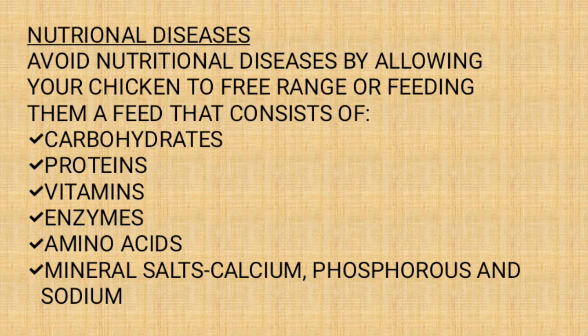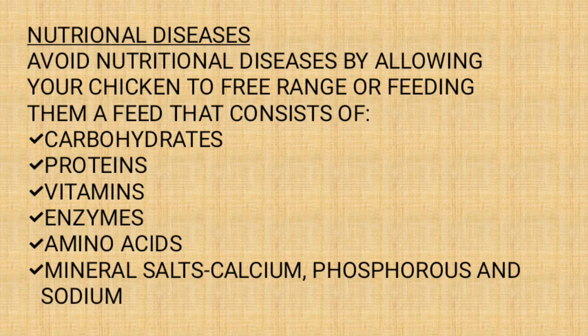The best way to avoid nutritional diseases is feeding your chicken with a feed that consists of all the necessary nutrients: carbohydrates to give your poultry energy, proteins to help them build their body, vitamins to boost the immune system, enzymes, amino acids, and mineral salts. This is for chickens that are bred indoors. If your chickens roam outside they will be able to get all these nutrients themselves, but commercial poultry farming often makes free-ranging impossible.